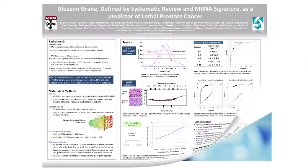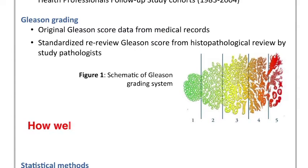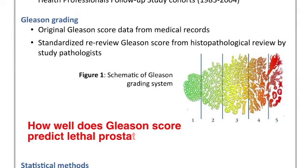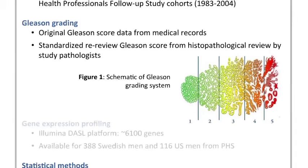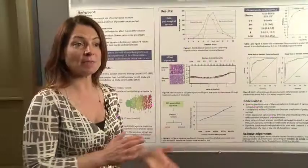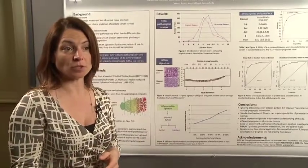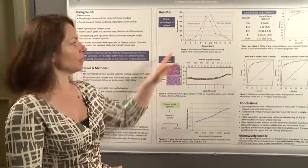The first part of our project was focused on how well does Gleason score predict lethal prostate cancer. The way pathologists grade Gleason grading has changed substantially over time, and you can see that here in this first figure. The pink line here refers to the original Gleason score when the men were originally diagnosed. These men were diagnosed between 1982 and 2002, so quite a long time.